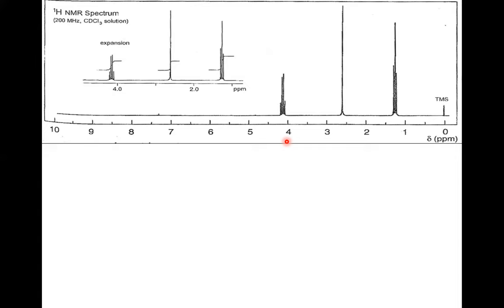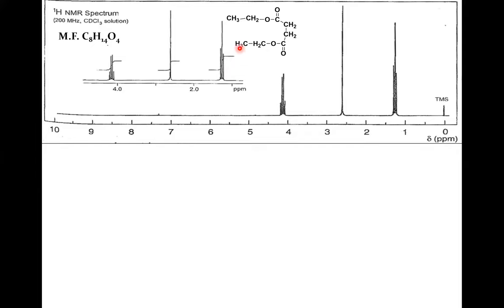Here is a molecular formula and its structure. How many types of proton are present? One, two, three. This is very important: if two methyl groups are in exactly the same environment, we call them magnetically and chemically equivalent — they give only one peak even though they are actually two groups. So two methyl groups give only one peak because they are identical.